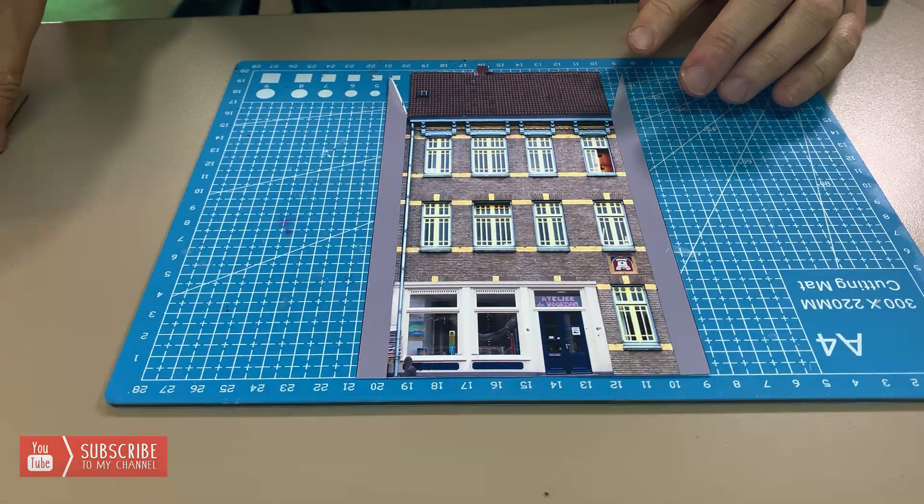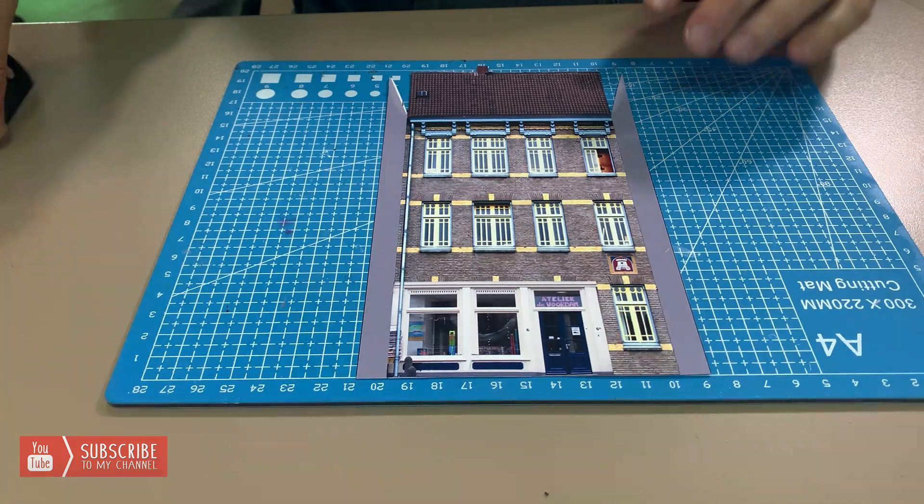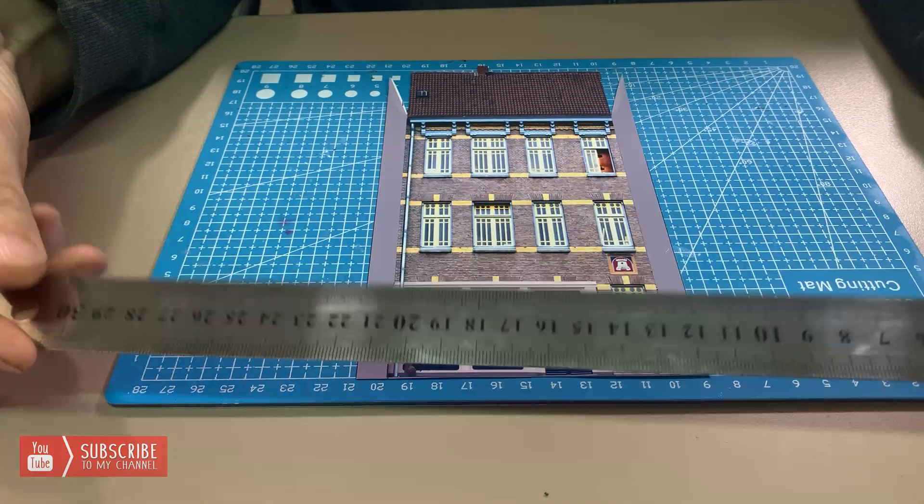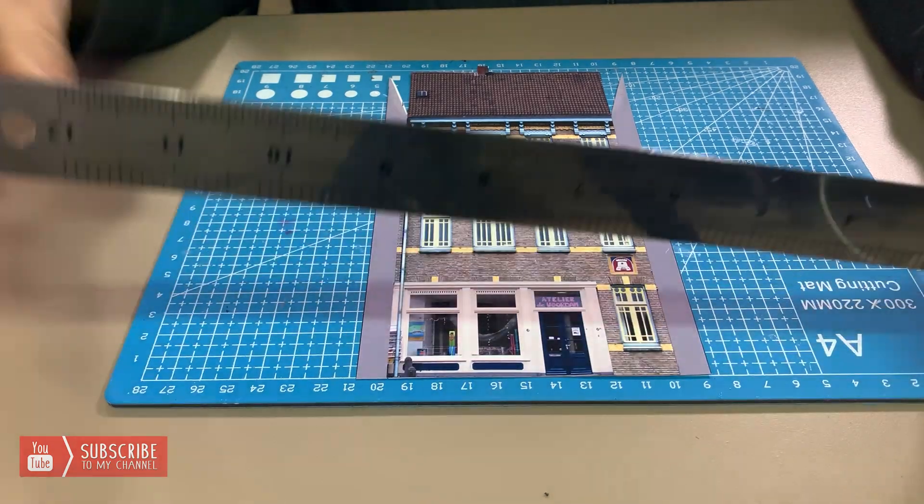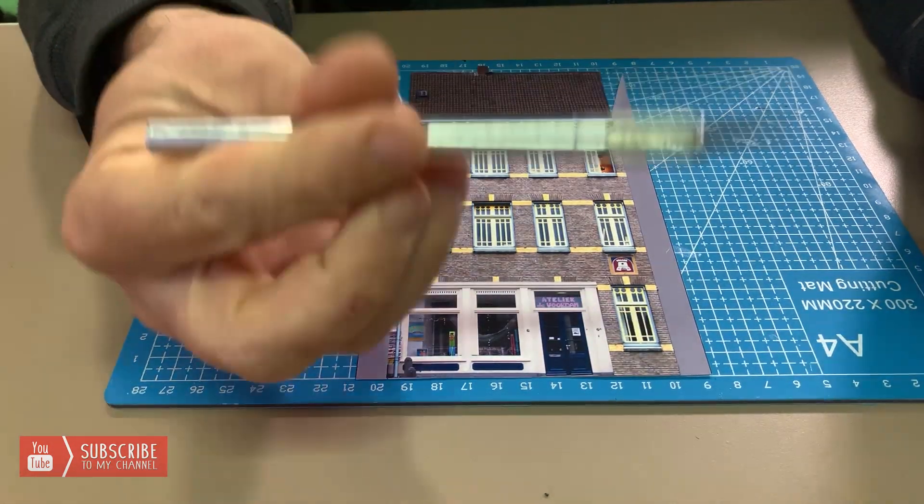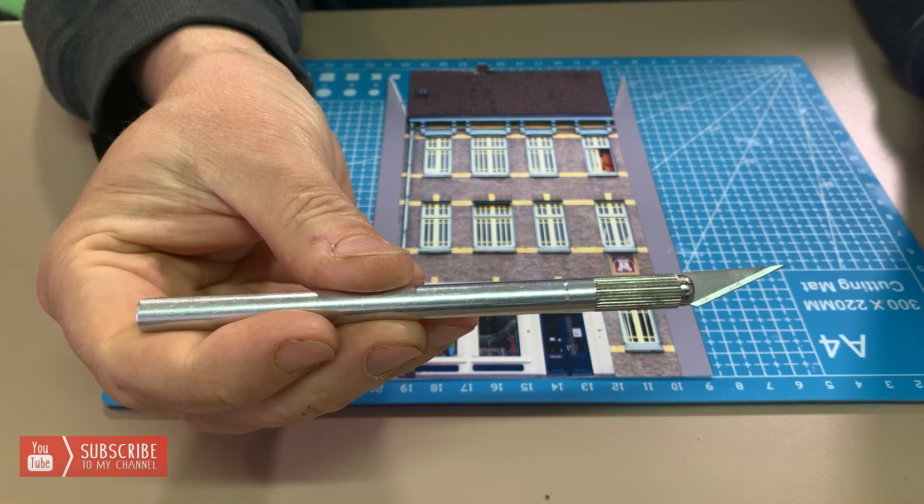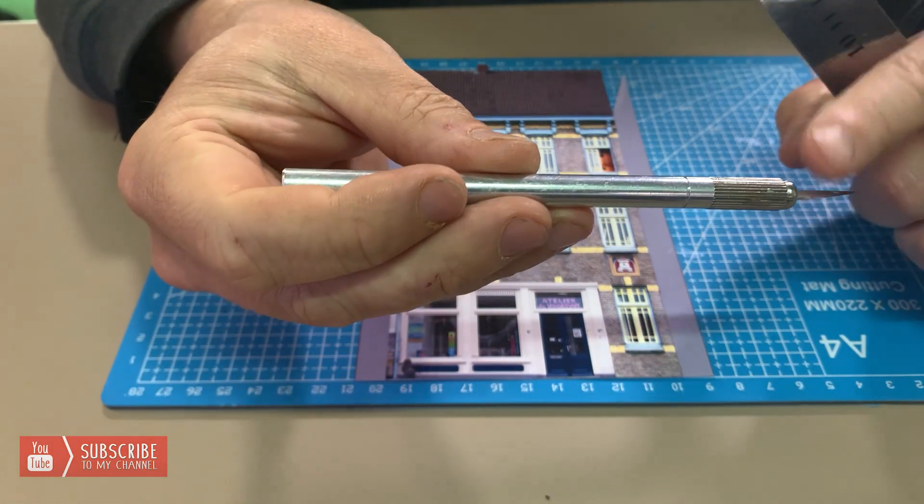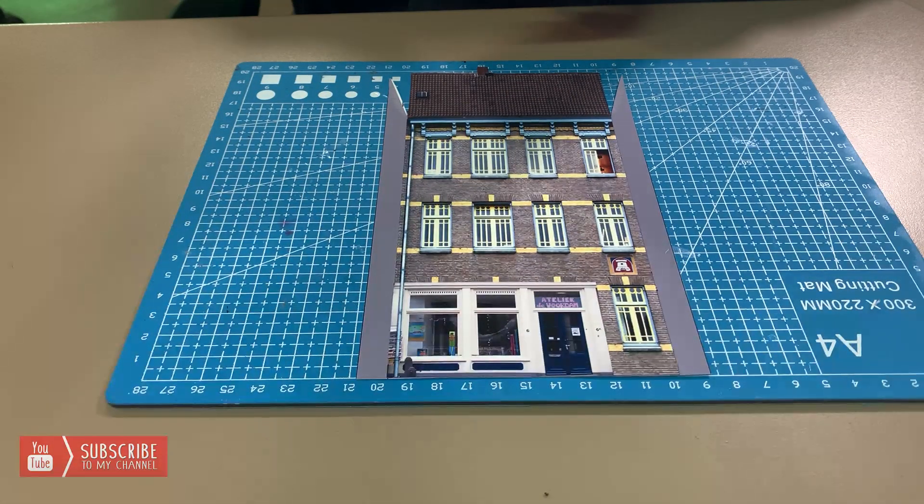We've printed out one of our printouts that we showed before. What we need now is some sort of metal ruler. It doesn't matter on the scale whether it's metric or imperial, and also an X-Acto blade.